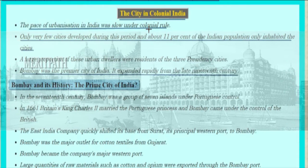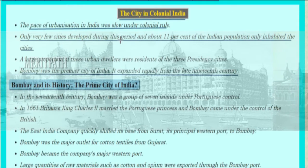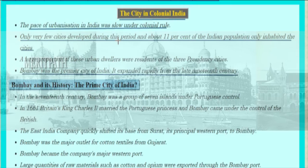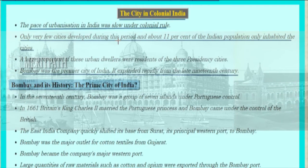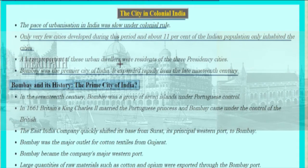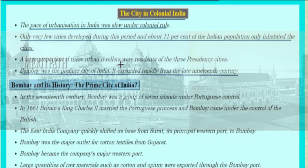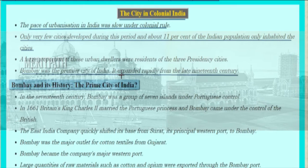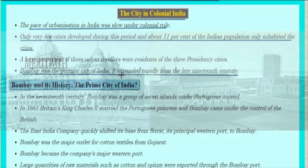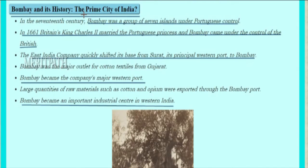The pace of urbanization in India was very slow under colonial rule. Only a few cities developed during this period, and about 11% of India's population inhabited the cities. A large proportion of urban dwellers were residents of the three presidency cities. Bombay was the premier city of India and expanded rapidly from the late 19th century.